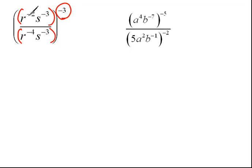So we would have r to the negative 2 raised to the negative 3. Power to power, we would multiply. So that would be r to the 6th power times s to the negative 3 raised to the negative 3. Power to power, we would multiply. So that would be s to the 9th power over.